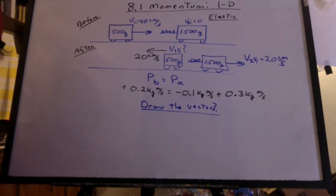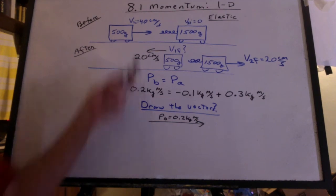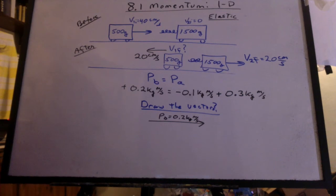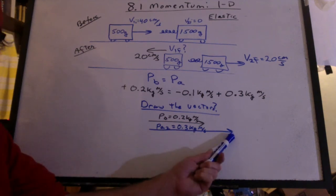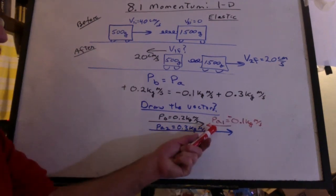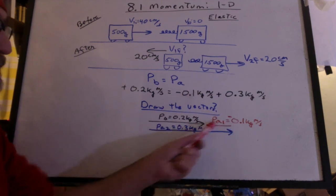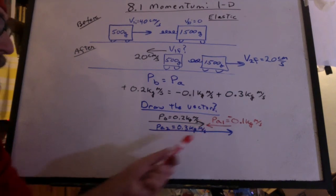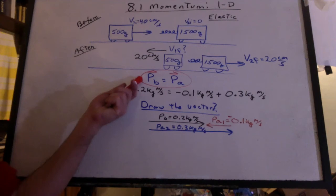Now, can you draw the vectors? That's the momentum before, which represents this momentum. What's the momentum after going to look like? The momentum after for object two is going to be longer. It's going to go all the way up to here. Well, the momentum after for object one is going the other way. If I put these two vectors tip to tail, we can see that they add up to the momentum before. Remember, this is vectors.